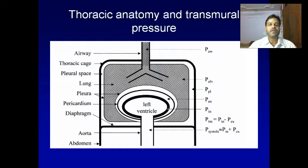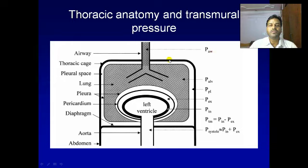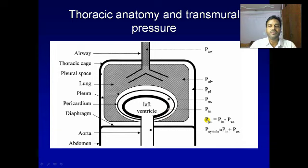As we know that the heart and lungs are both contained in the thoracic cavity, so each organ has its effect on the other. This is a schematic representation of the thoracic cavity where PAW is the pressure of the airway, PALV is alveolar pressure, PPL is pleural pressure, PEX is extramural pressure, PIN is intramural pressure, and PTM is intramural pressure minus extramural pressure. Systolic pressure is roughly equal to intramural pressure plus extramural pressure.